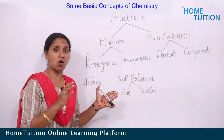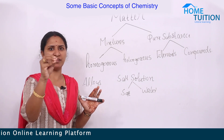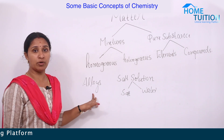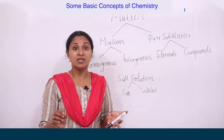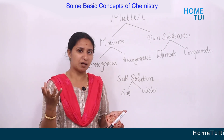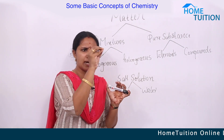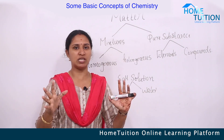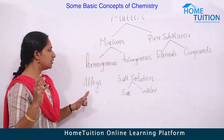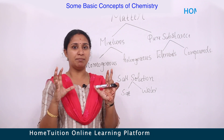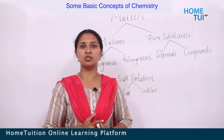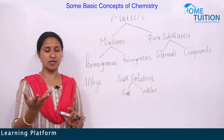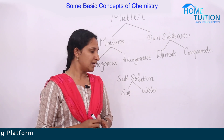In salt solution we cannot distinguish the salt and water particles. Similarly, steel — an alloy of iron and carbon — we cannot distinguish iron and carbon particles separately; it appears uniform as steel. So these are homogeneous mixtures: mixtures with uniform composition throughout.